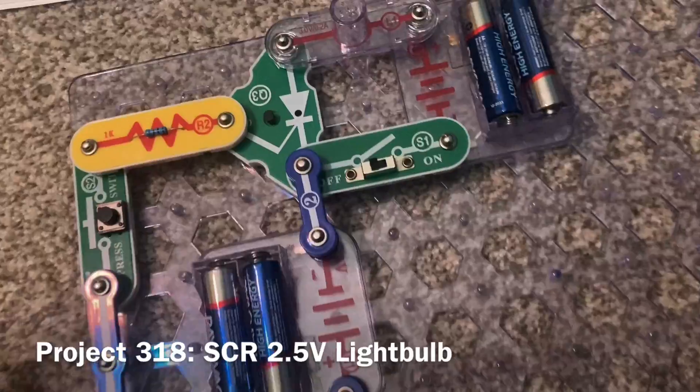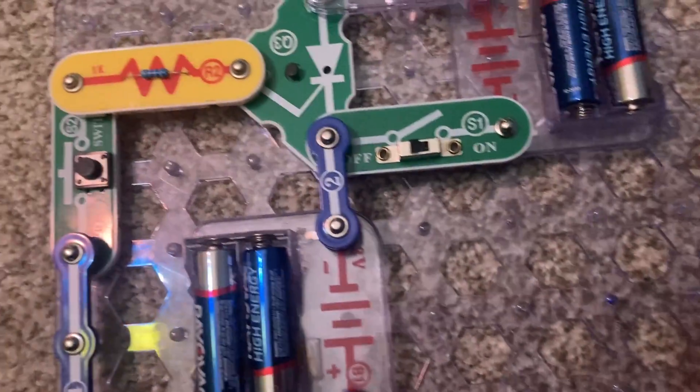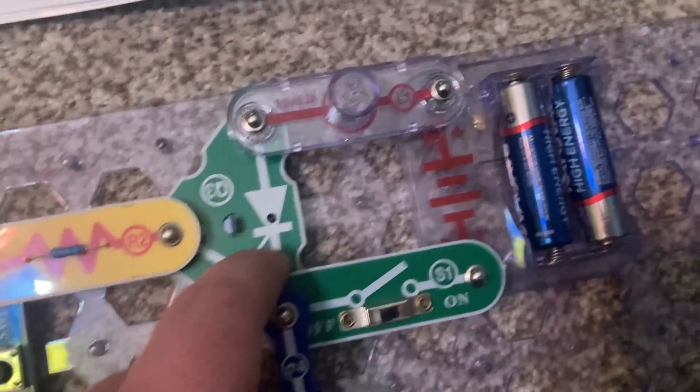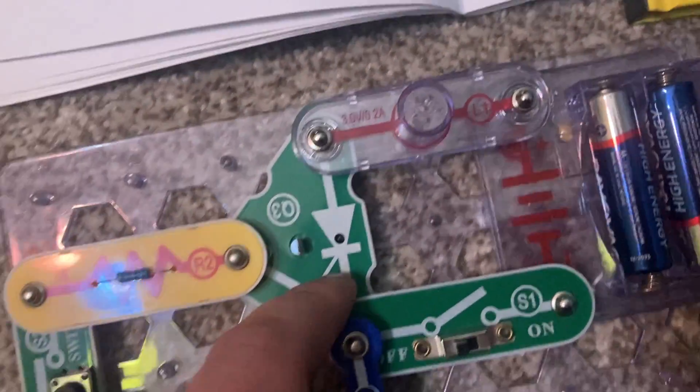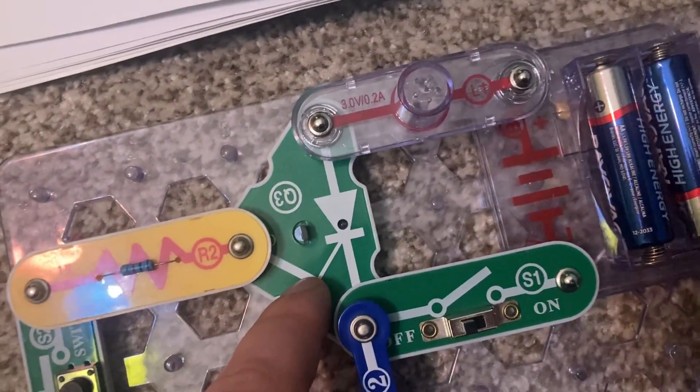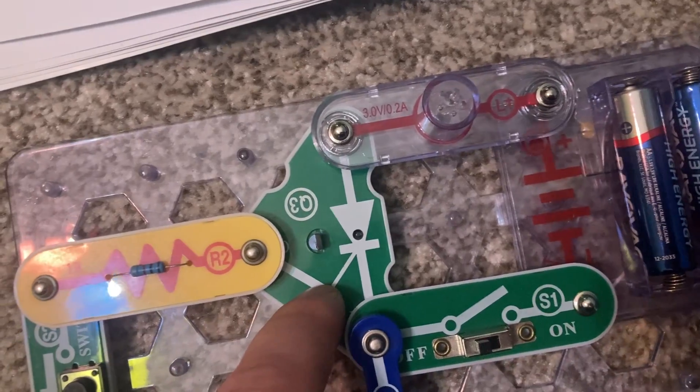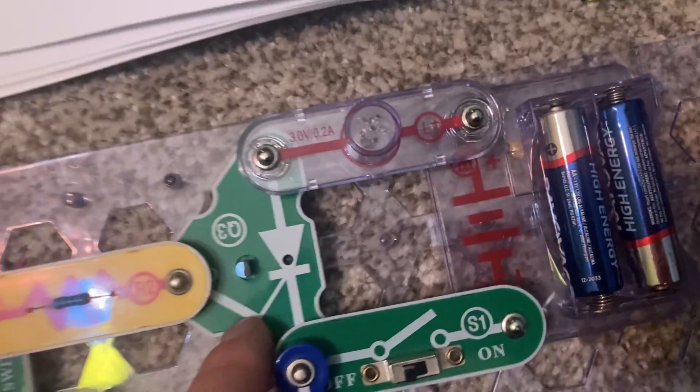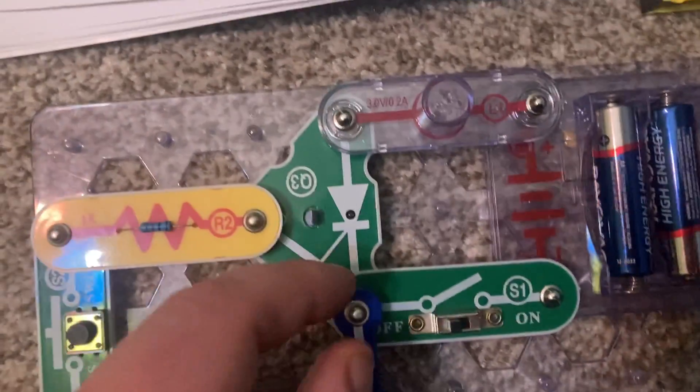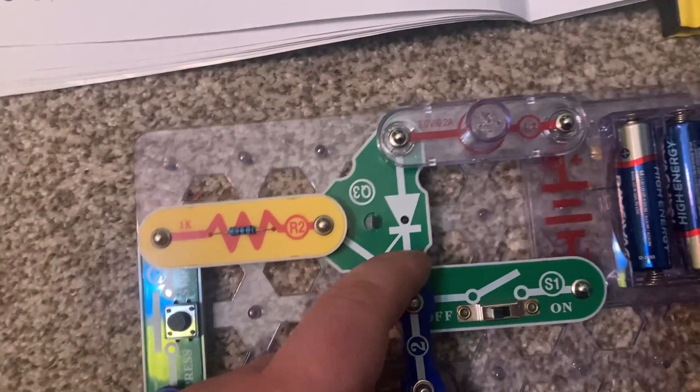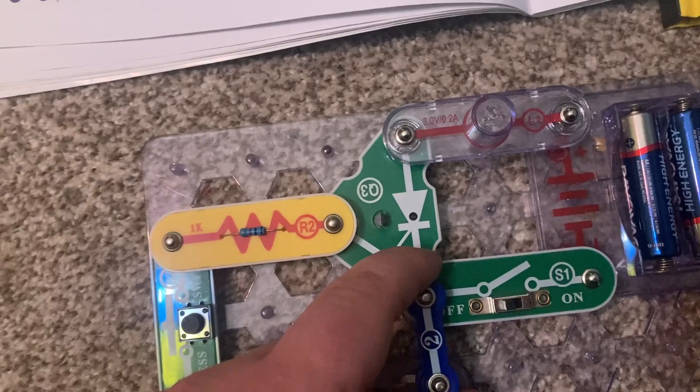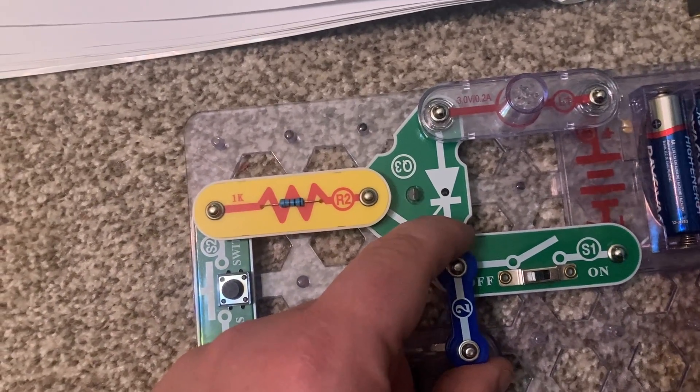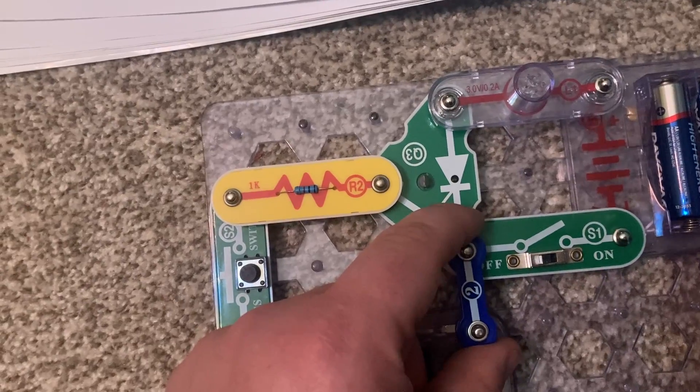This is the SCR 2.5 volt light bulb. This is the SCR or Q3, which is an electronic switch with three leads, anode cathode and gate. Like a standard diode, it allows current to only flow in one direction and it will only conduct in the forward direction when triggered by a short pulse or steady voltage that is applied between the gate and the cathode terminals.